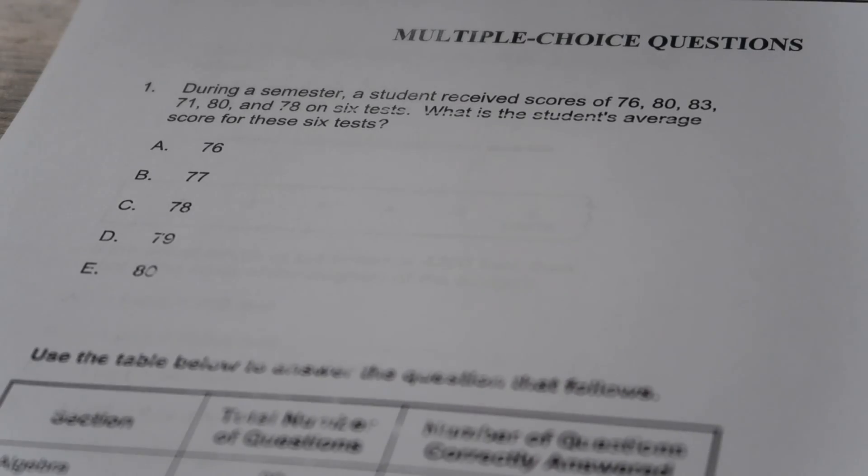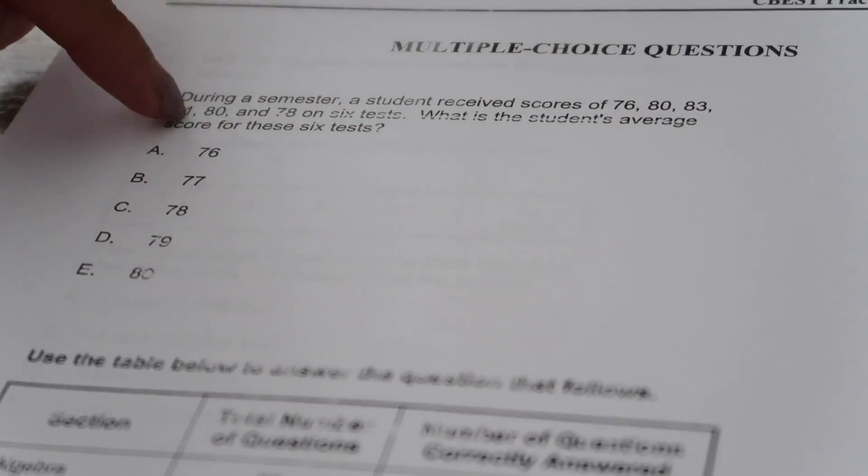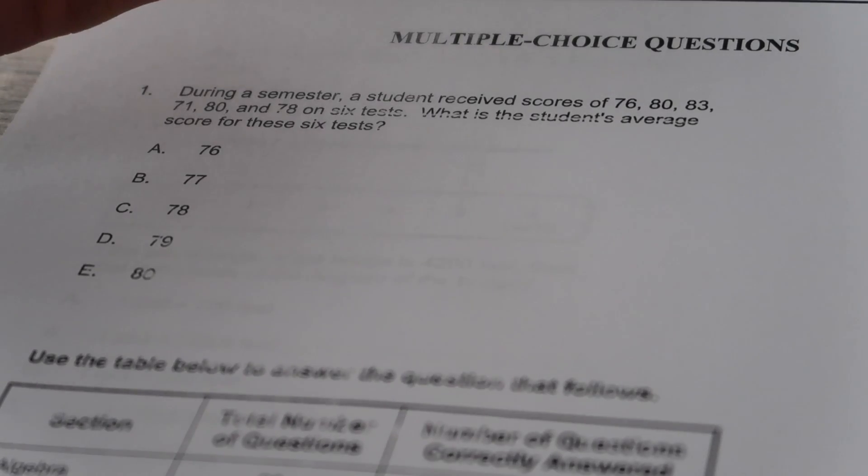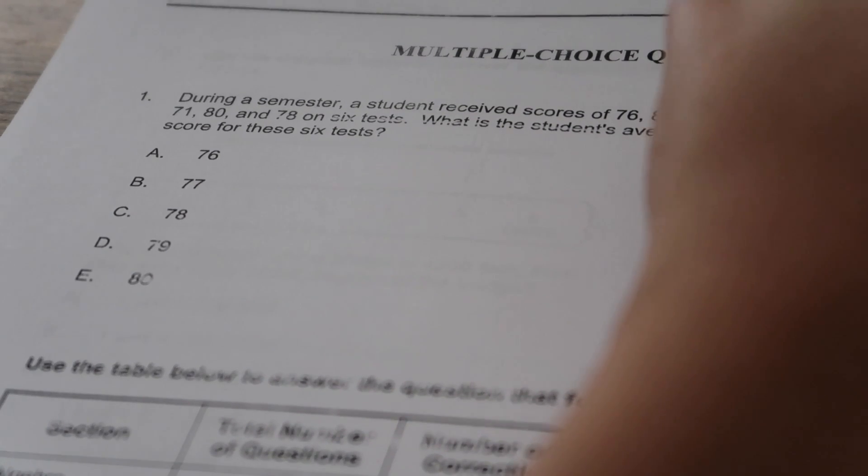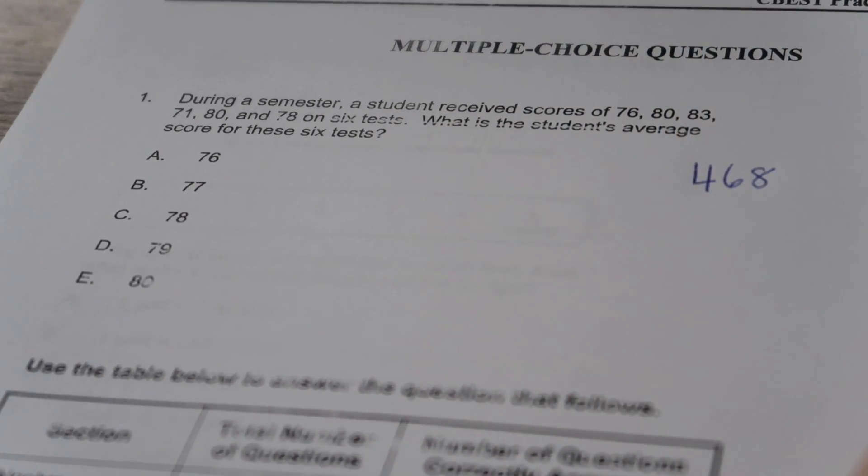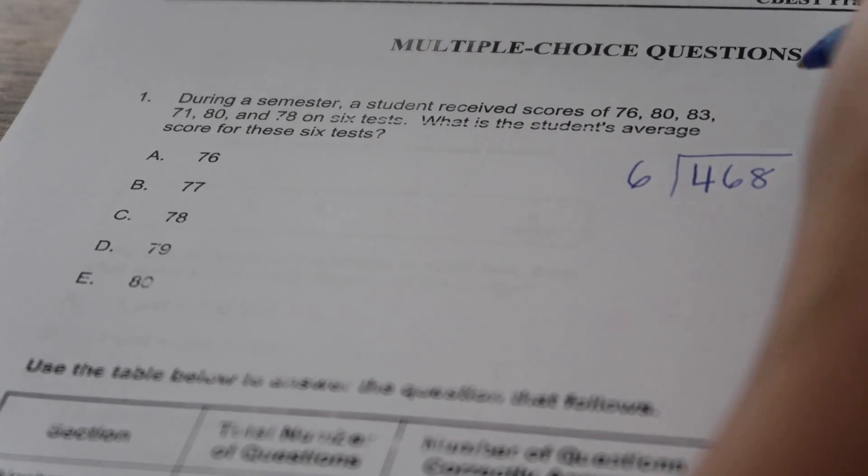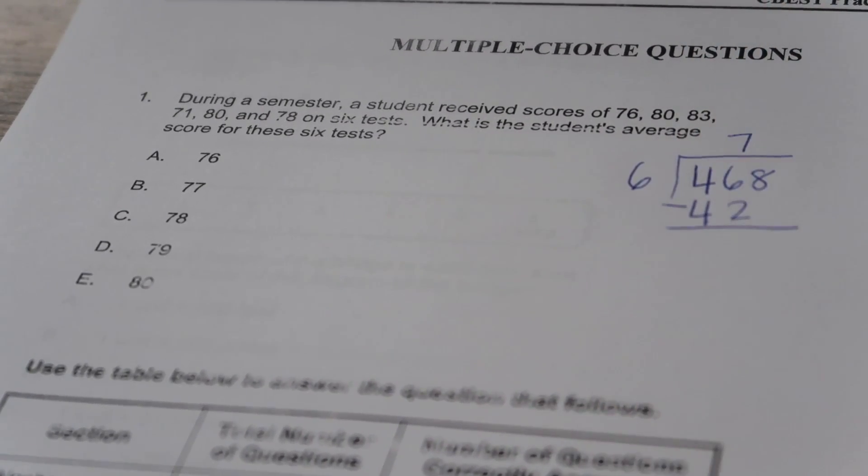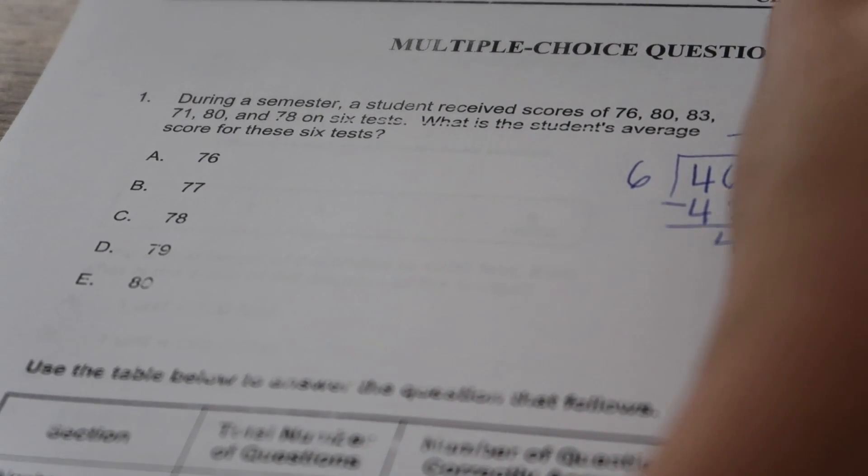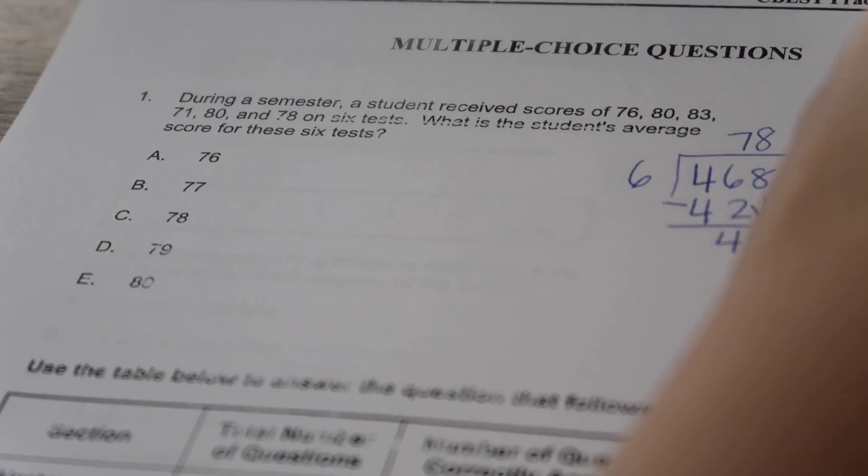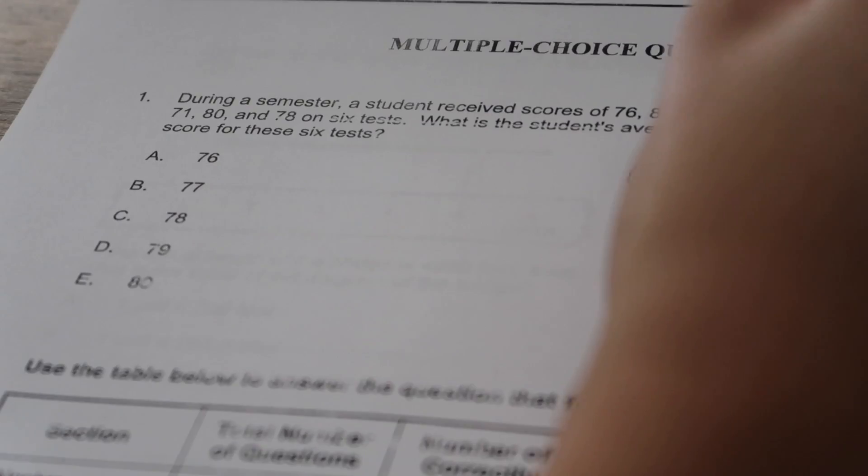During a semester, a student received scores of 76, 80, 83, 71, 80, and 78 on six tests. What is the student's average score for these six tests? I'm going to add all of these numbers up together and then divide by however many tests there are, because that's how you find the average or the mean. When I add all of these numbers up, I got 468, and then I'm going to divide by six. Six can go into 46 seven times, then I subtract, then I get 6 minus 2 is 4, bring down the 8. 6 times 8 is 48. So the student's average score from all six tests is 78.